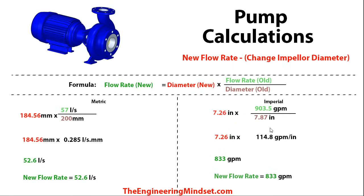The next one we're going to look at is the new flow rate that would occur if you were to change the impeller diameter. I'll point out that trimming down the impeller to change its diameter isn't the preferred way anymore — once you trim it down, you can't add that material back on, so you'd need to replace the entire impeller. A much better way is to use a variable speed drive or variable frequency drive to change the speed of the pump to meet your design criteria. But if you are looking to change or trim the impeller, you can use these calculations.